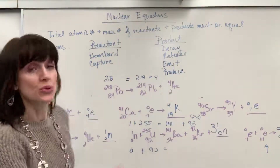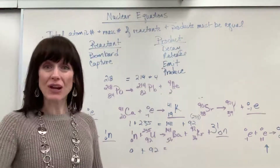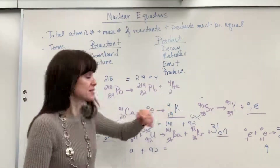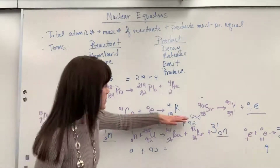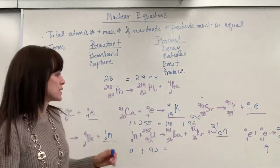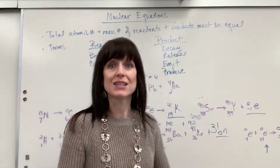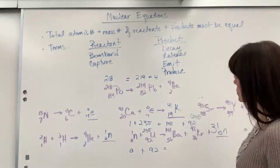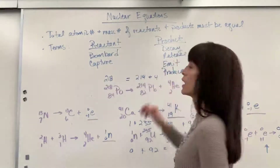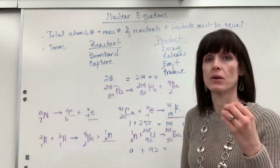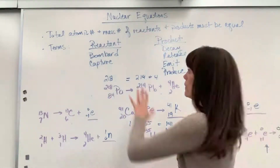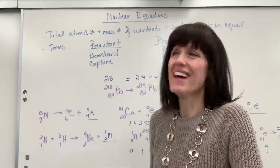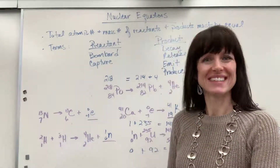So there is balancing nuclear equations — really straightforward. Just make sure the total mass number on the reactant side equals the total mass number on the product side, and total atomic number on the reactant side equals total atomic number on the product side. The key is knowing all the particles, so have your particles memorized cold. Know these buzzwords, and if you're given word equations, you'll know where to write particles on the reactant or product side. Good work — have fun with your nuclear equations!